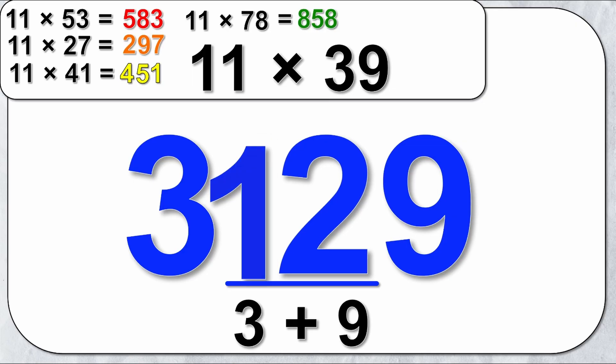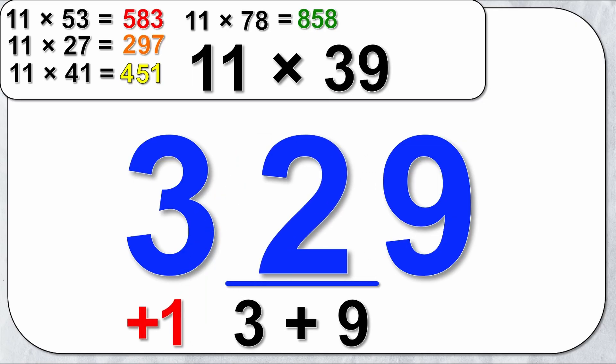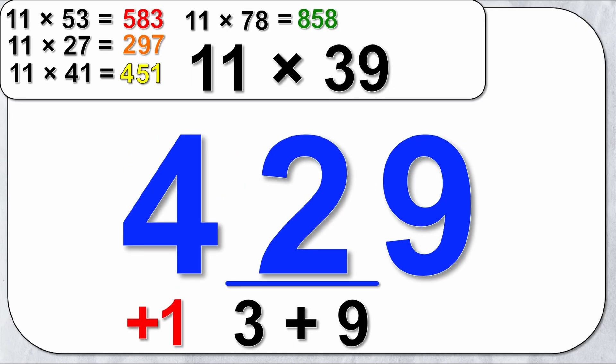But I'm going to carry the 1 and keep the 2 in the center. So I add 1 to the first number which is now 4, and so my answer 11 times 39 is 429.